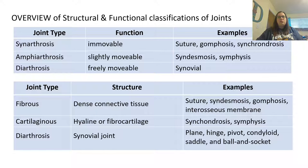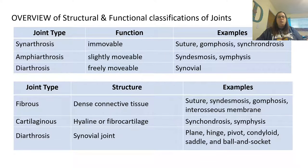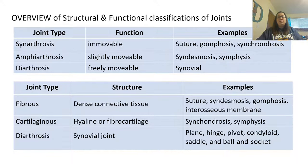Here is an overview of the structural and functional classifications of the joints. Synarthrosis joints are immovable — examples include suture, gomphosis, and synchondrosis. Amphiarthrosis joints are slightly movable — examples include syndesmosis and symphysis. Diarthrosis joints are freely movable — these are the synovial joints. A second chart shows joint type by structure: fibrous joints have dense connective tissue and include sutures, syndesmosis, gomphosis, and interosseous membranes; cartilaginous joints have hyaline or fibrocartilage and include synchondrosis and symphysis; and diarthrosis synovial joints include plane, hinge, pivot, condyloid, saddle, and ball and socket.